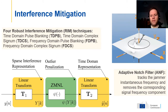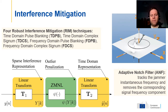The paper considers five popular interference mitigation techniques, including time domain pulse blanking, time domain clipping, frequency domain pulse blanking, and frequency domain clipping. These four techniques are part of what is called Robust Interference Mitigation (RIM) and are built based on principles from robust statistics. We have also considered the adaptive notch filter, which is a popular technique that tracks the jammer's instantaneous frequency and tries to remove the jamming component from the input samples.